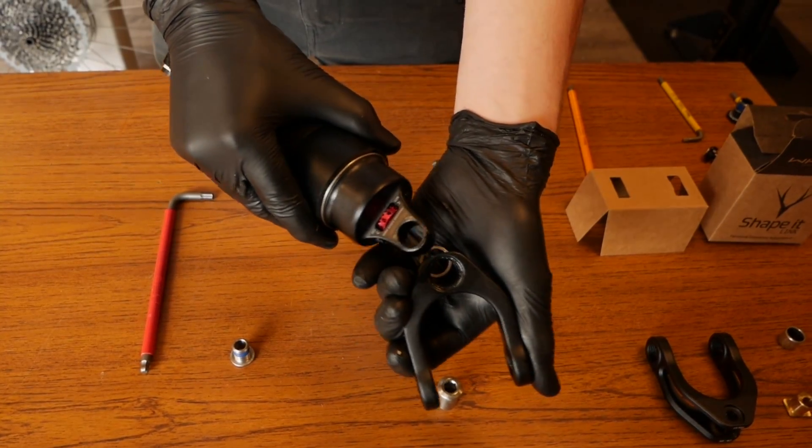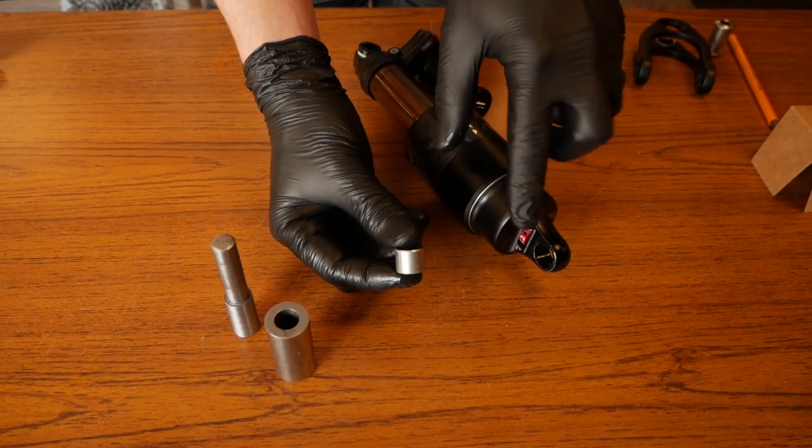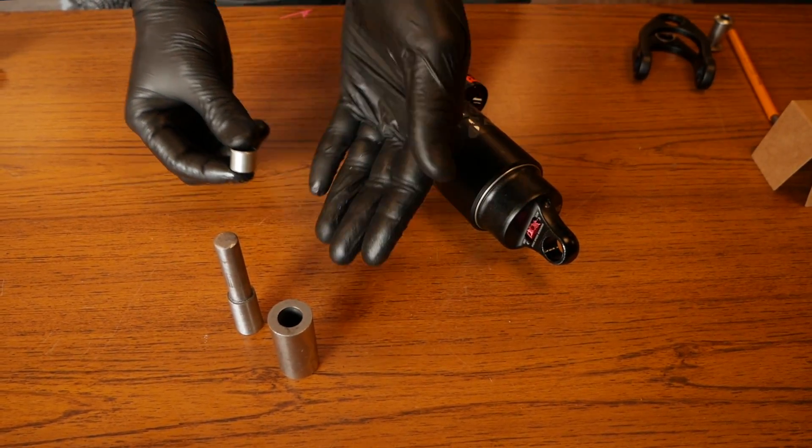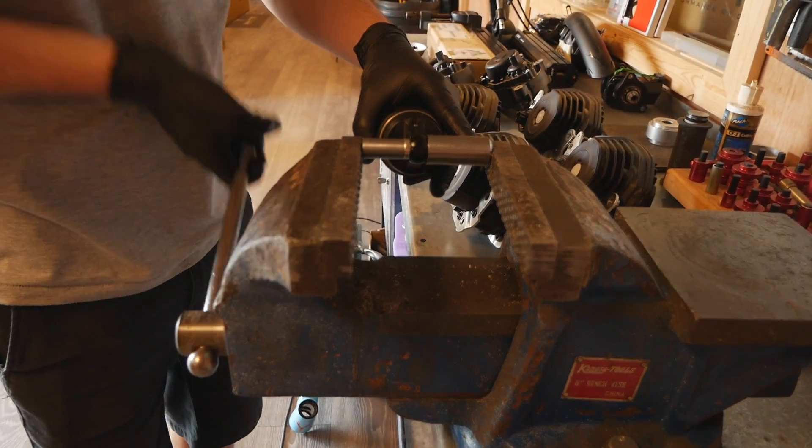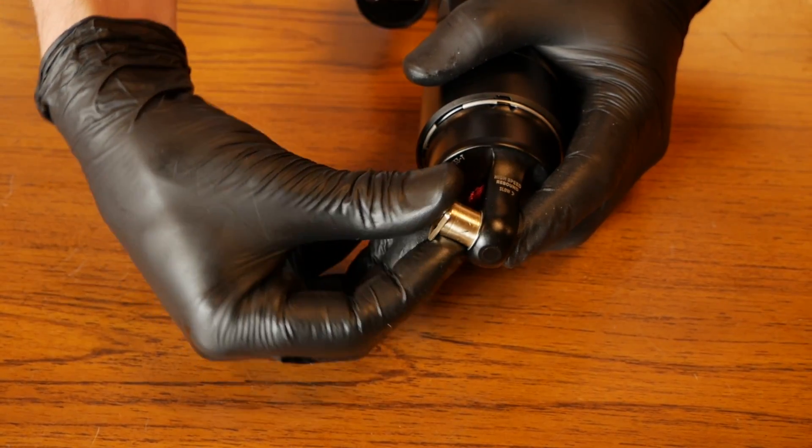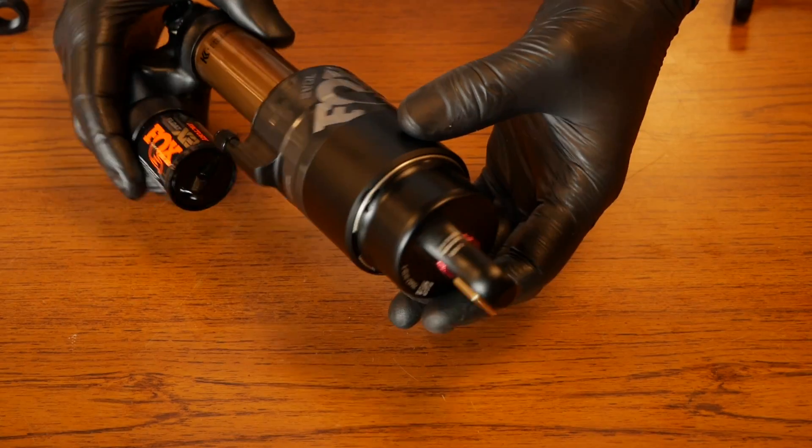Taking your DU bush, press it into the bottom eyelet of the shock using the press. You then fit the brass insert depending on your setup preference.